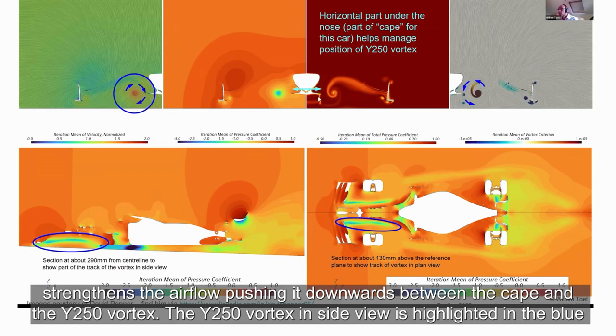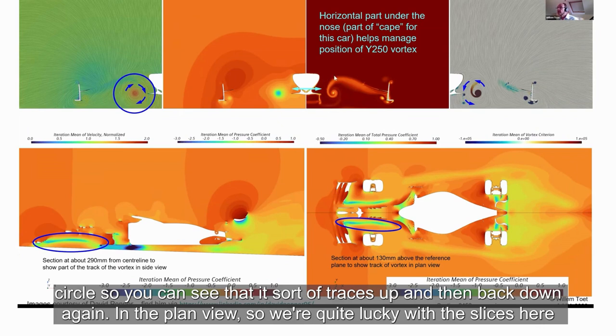The Y250 Vortex in side view is highlighted in the blue circle. So you can see that it sort of traces up and then back down again.